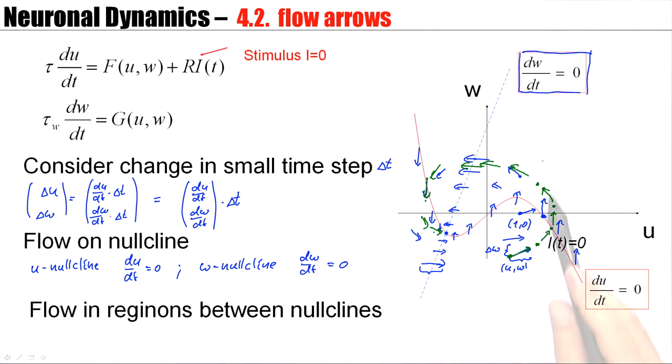Once you have constructed the flow pattern, as I did with the blue arrows here, you can basically read off the dynamics by just following the flow. The flow carries you along. It's like throwing a little wooden stick into a lively river. It's taken along by the flow until, at some point, it may stop. There might be a fixed point where it gets stuck.